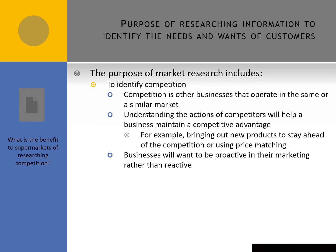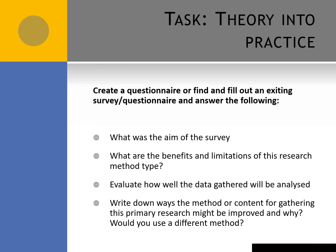As a task, think about what the benefits to supermarkets of researching their competition are — for example, why would Aldi want to do market research, who are they up against, and what are they doing after that research? For a theory into practice task: create a questionnaire or find and fill out an existing survey. Think about the aims of the survey, the benefits and limitations of the research method, how well the data gathered will be analysed, and the validity and reliability of the data. Also consider ways the method might be improved and whether you would recommend using a different method.